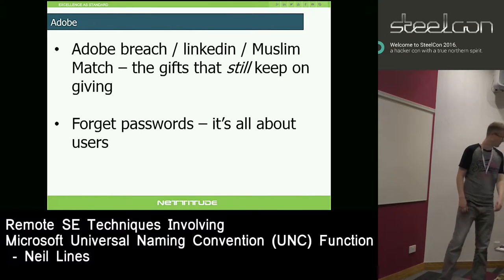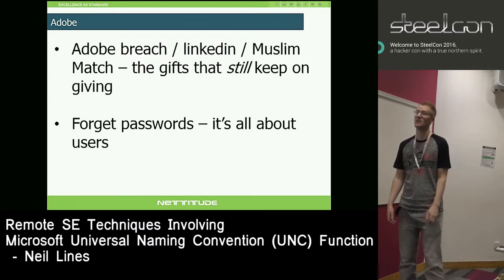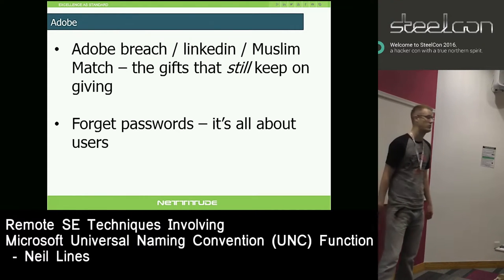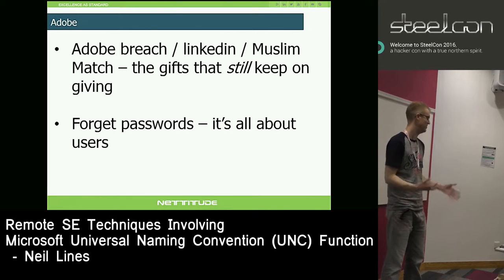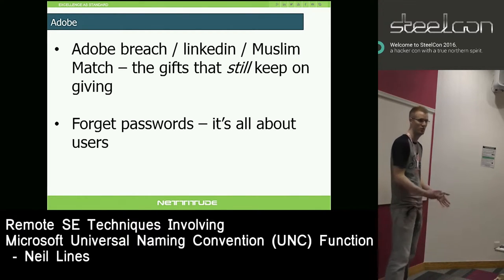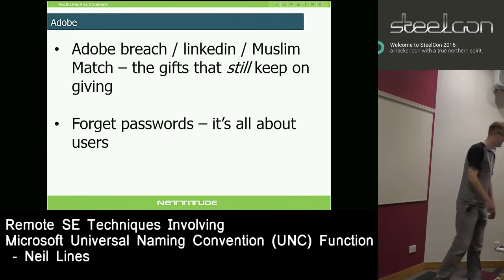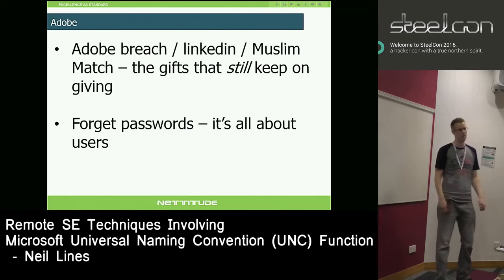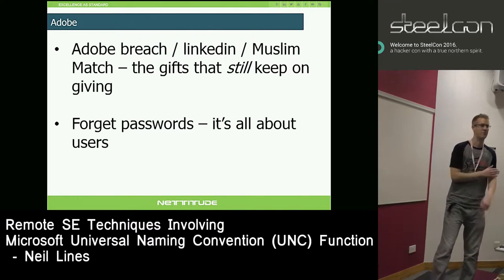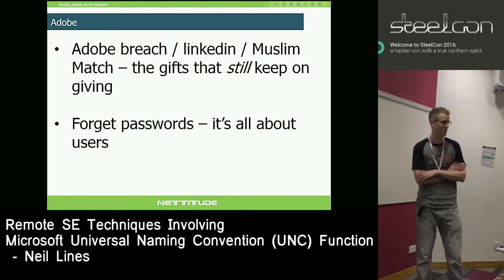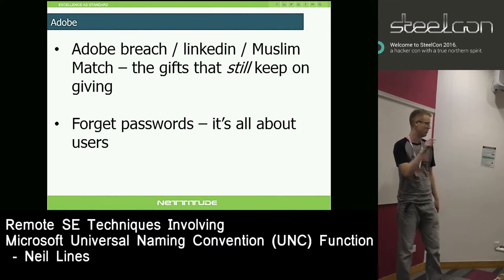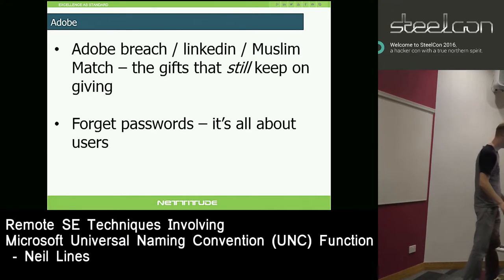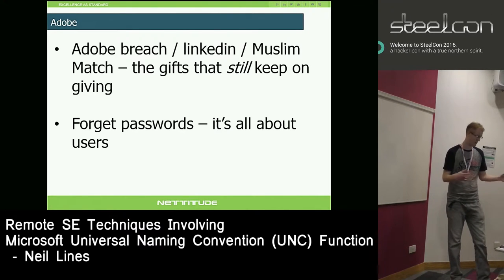Adobe Breach, LinkedIn, Muslim Match - they're all gifts that keep giving. A lot of us crack passwords - it's nice to throw a dictionary at a massive database of password hashes. But for social engineering it's not really about that so much anymore. The passwords are useful for checking password reuse and authenticating with OWA. What they're really useful for is email addresses - you can drag in any email addresses you didn't get with Prowl and supplement your list from these other breach sources.